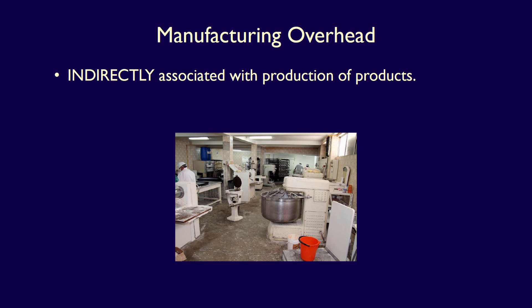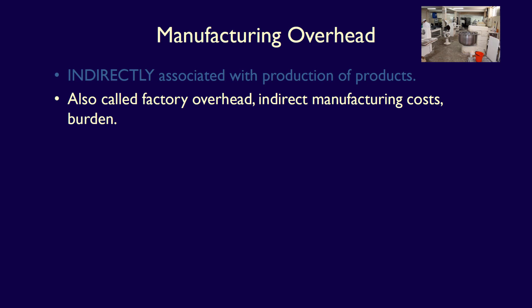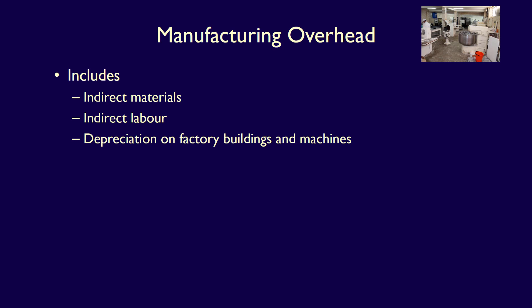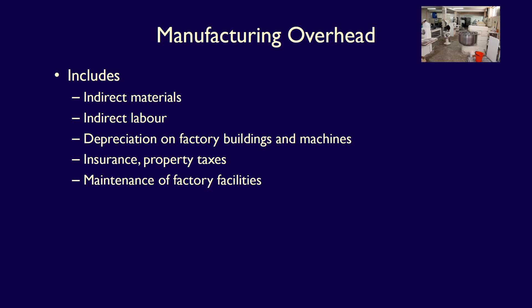What is a manufacturing overhead budget? Manufacturing overhead are those costs which are indirectly associated with the manufacture of a finished product. Manufacturing overhead is also called factory overhead, indirect manufacturing costs, and burden. Costs included in manufacturing overhead are indirect materials, indirect labour, depreciation on factory buildings and machines, insurance and property taxes, maintenance costs, supervisor salaries, and equipment lease or rental costs. Basically, if the cost is manufacturing-related but cannot be classified as direct materials or direct labour, it should be classified as manufacturing overhead.